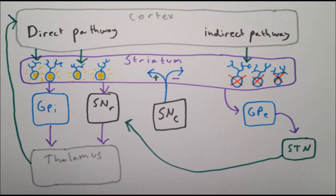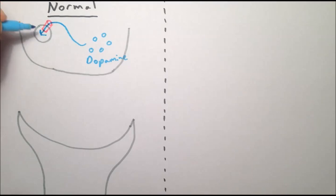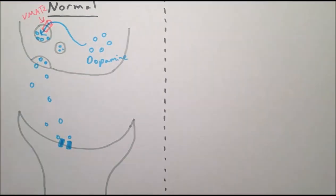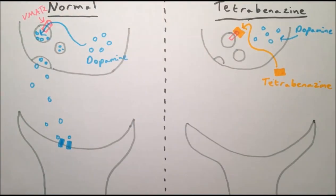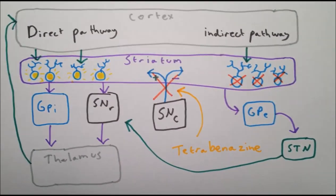Unfortunately, no treatments have been found to be consistently effective at treating Huntington's disease, although there is some evidence for tetrabenazine. Normally, dopamine is transported into vesicles by the vesicular monoamine transporter 2 protein. Vesicles filled with dopamine then fuse with the neuronal cell membrane and dopamine is released into the synaptic cleft, where it diffuses across and binds to dopamine receptors, producing its effects. However, tetrabenazine blocks the vesicular monoamine transporter 2 protein, preventing dopamine from being loaded into vesicles. This means no dopamine is released and it is unable to activate dopamine receptors. Tetrabenazine therefore reduces the excitation of the direct pathway and its inhibition of the indirect pathway, helping shift the balance back and may result in some improvement in the symptoms of Huntington's disease.